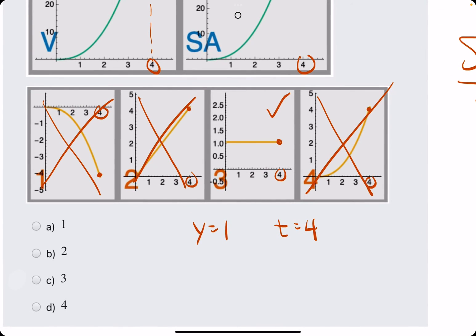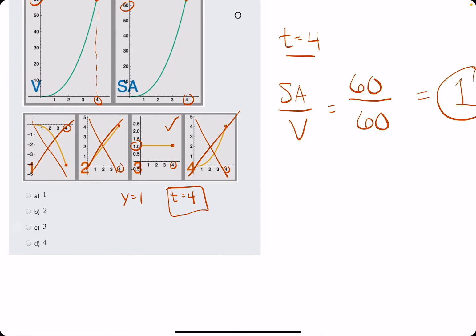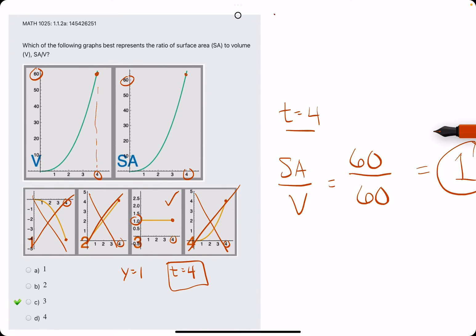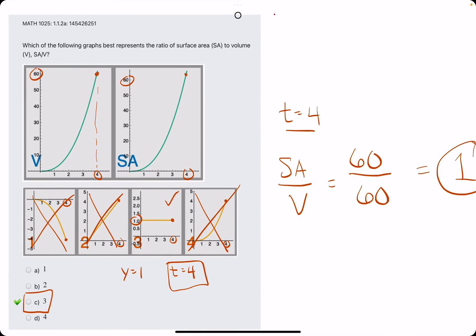So because 3 has a y value of 1 at time 4, 3 is our best answer. So we break out the eraser and we see that C is our answer.